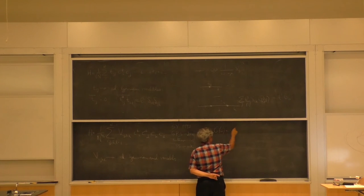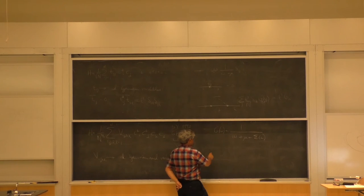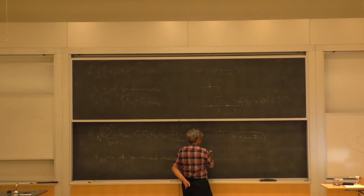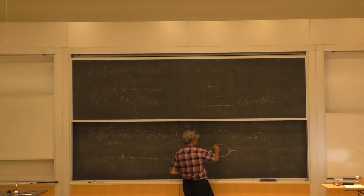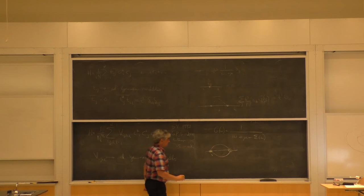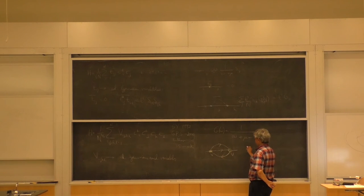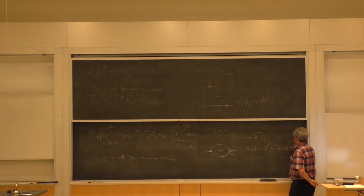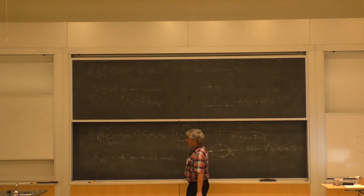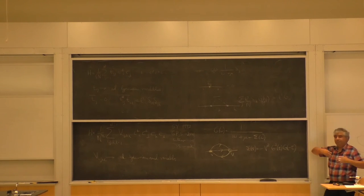So what you find is that, again, your G of omega equals 1 over (i omega plus mu minus sigma of omega). And for sigma of omega, you've got some V here with four fermions, and the only graph that survives is this sunset diagram. This tells you that sigma of tau is minus V squared times G squared of tau times G of minus tau. So instead of getting sigma equal to G, sigma is roughly speaking G cubed.